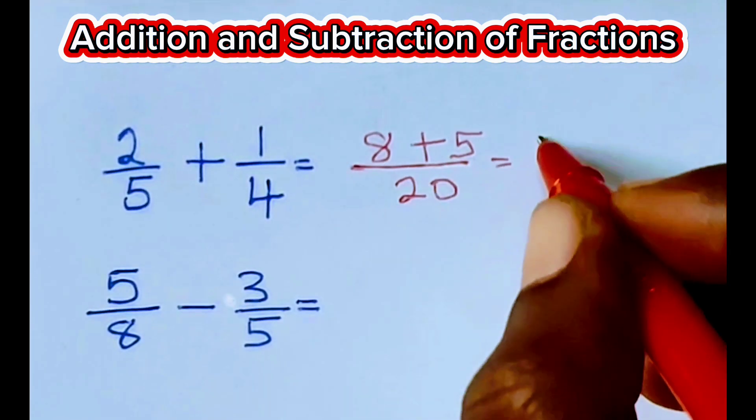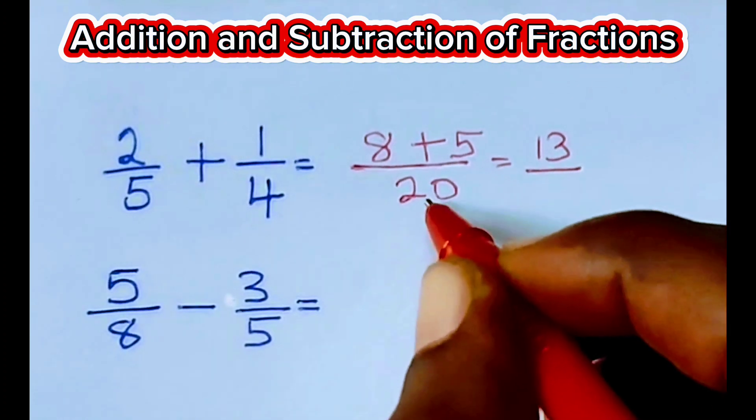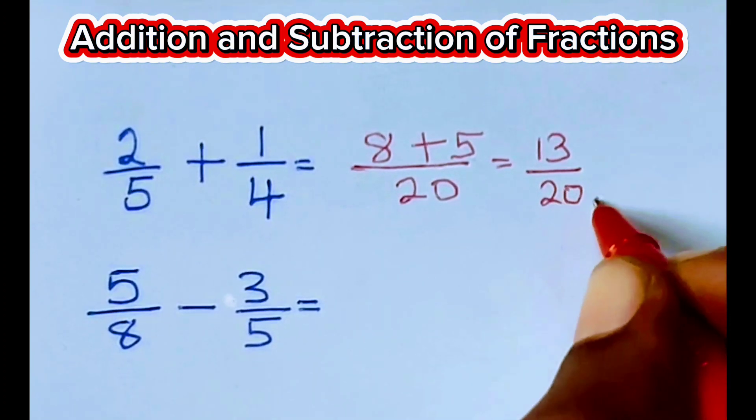8 plus 5 is 13. And then we bring our 20 here. Here is our answer.